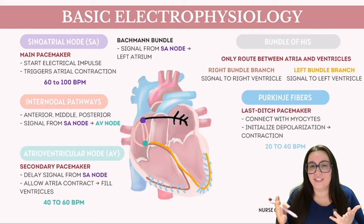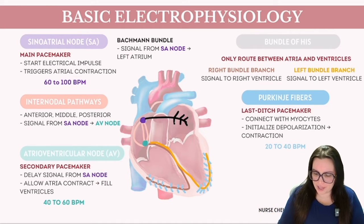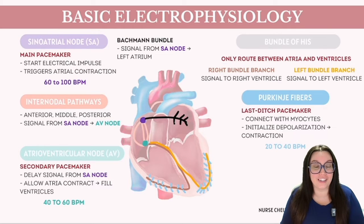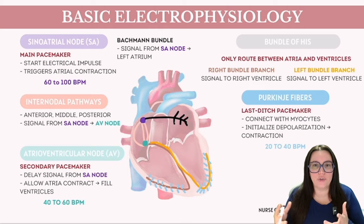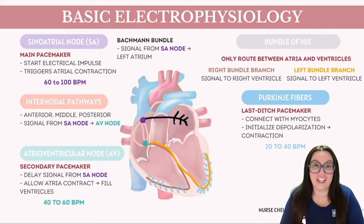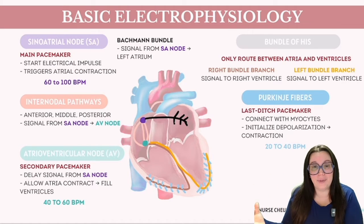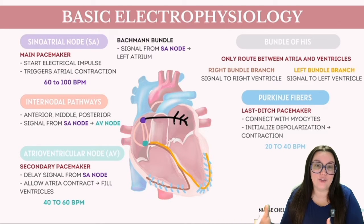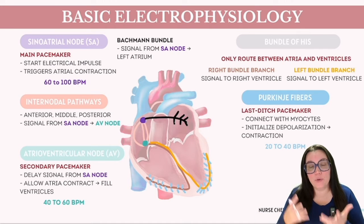The bundle of His splits into two distinct pathways: the right bundle branch, which transmits electrical impulses to the right ventricle and terminates with the Purkinje fibers, and the left bundle branch, which is dedicated to conveying the signal to various parts of the left ventricle.